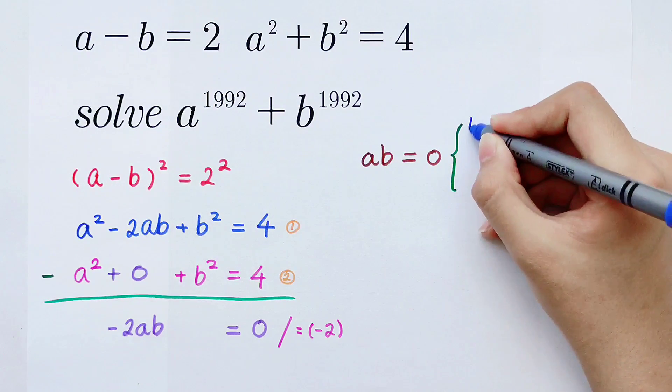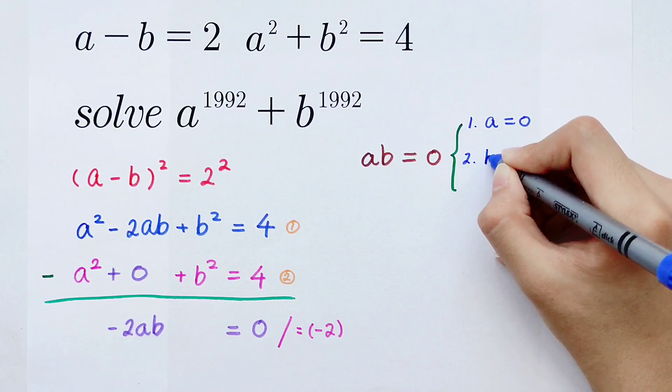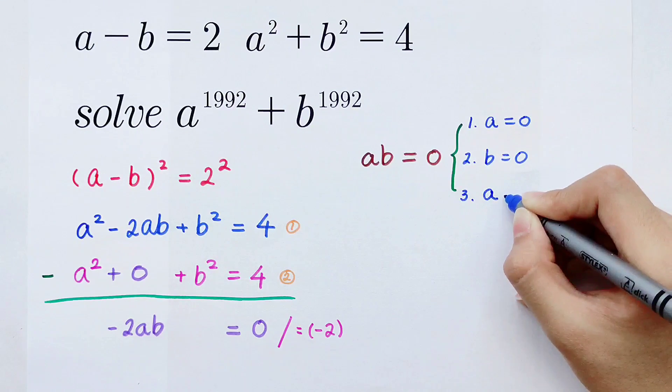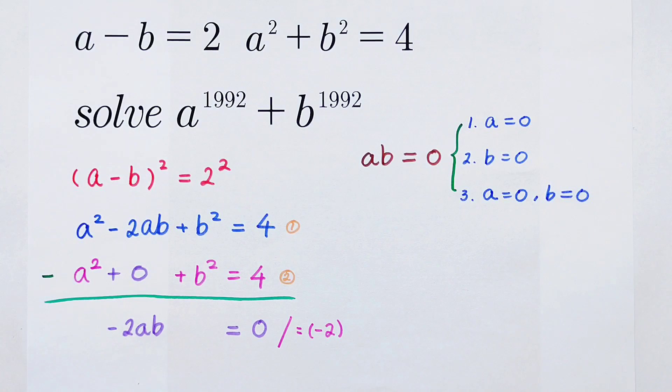The first one, a can be 0. Or the second one, b is 0. Or the third one, a and b both are 0.